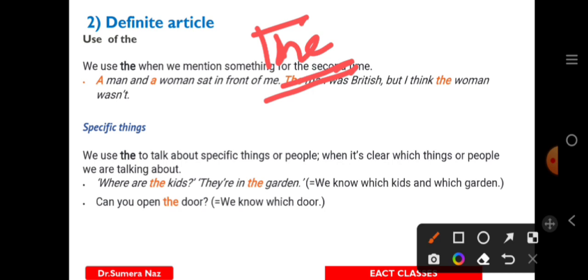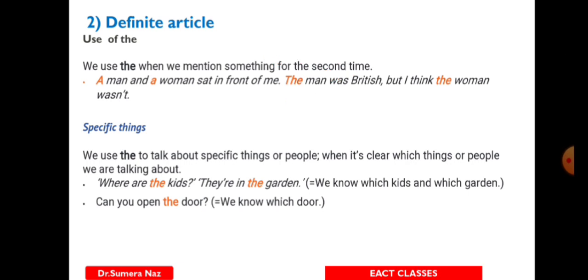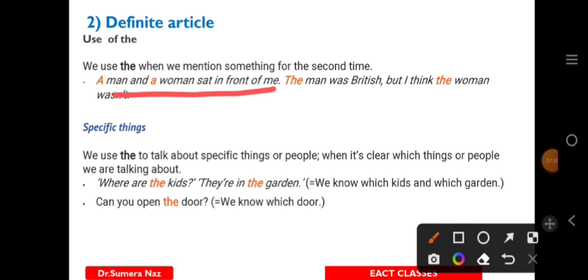'A man and a woman sat in front of me.' This is the first part of the sentence, so here we use A and AN as per the vowel sound. In the second part of the sentence, we always use the definite article 'the' with the noun.